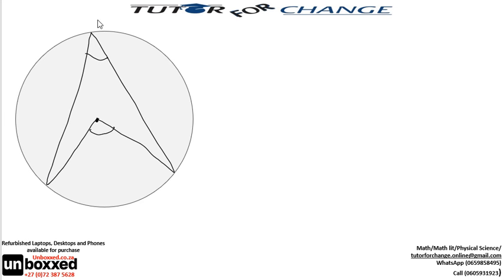Twice as that, which means that if I have 2x here, then here I'm going to have x. So if maybe you were asked to prove that angle in a semicircle is 90 degrees...